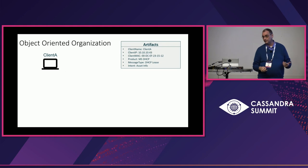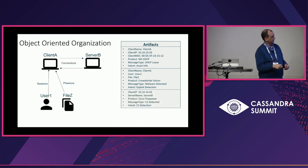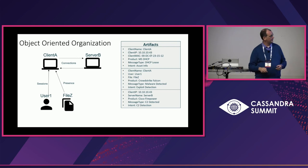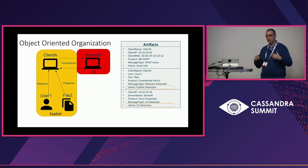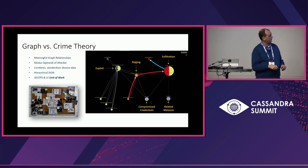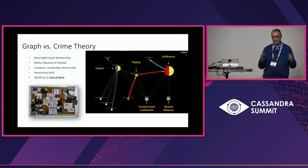Once we have the artifacts, we build a graph. A DHCP lease renewal tells us a machine has a certain IP at a certain time with a certain MAC address. Another artifact says user one is logged into that machine. Another says the IP belonging to client A talked to server B. These artifacts build a contextual graph of relationships, and we understand the intent — for example, this is a malware exploit. Persisting that graph to Cassandra, we can analyze it to detect a multistage data theft attack and generate metrics on what types of tools were used — graph-level, unit-of-work-level analysis.